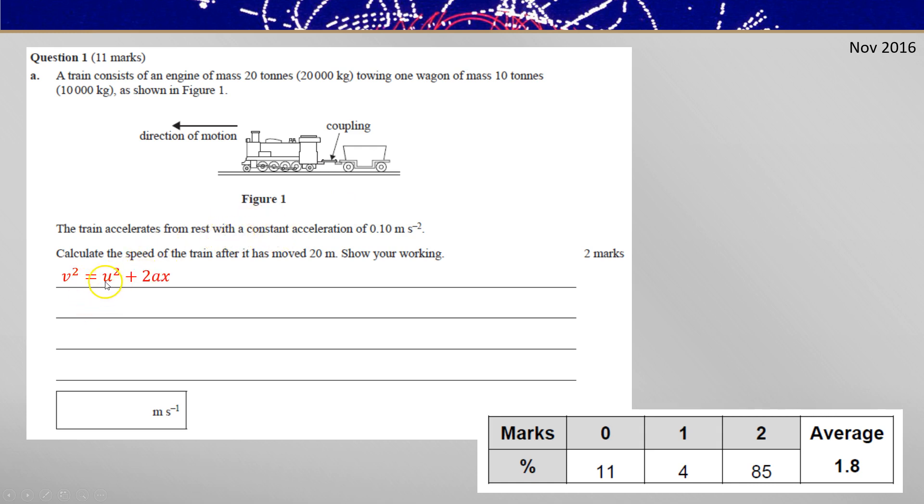So V squared is U squared plus 2AX lets you calculate the velocity at the end after it's travelled 20 metres which is the square root of 4 or 2 metres per second. I've put my answer here to two significant figures because I have two significant figures given in the data.